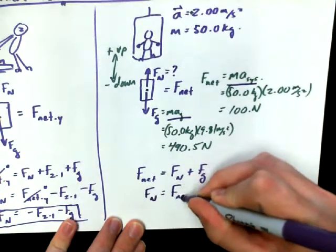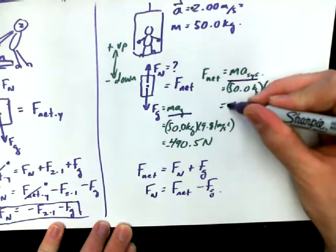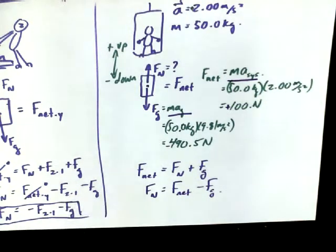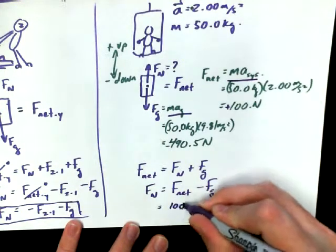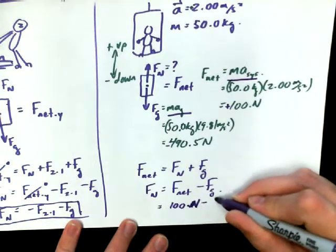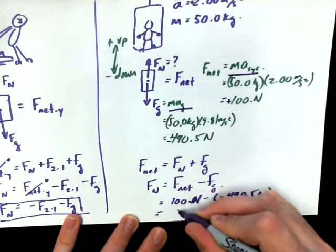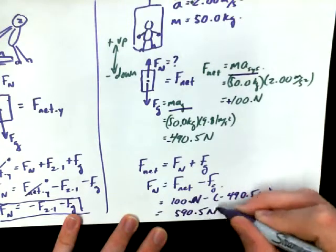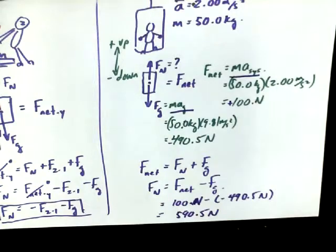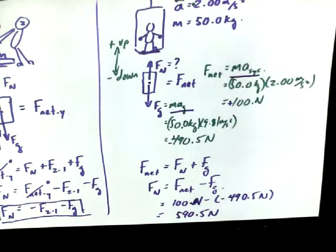So if we get Fn all by itself, Fn is equal to Fnet minus Fg. Really, this Fg value is a negative value, and the Fnet is a positive value. It's something to keep in mind when I sub in my values. So Fnet being 100 newtons, minus negative 490.5 newtons, gives me a total of 590.5 newtons. So we say that the normal force is 590.5 newtons. In other words, the bottom of this elevator is pushing up on this person's feet with 590.5 newtons. That's all we're really trying to say here. We're not saying that the person weighs 590.5 newtons. We're just saying what the pressure is on the feet with the contact forces.